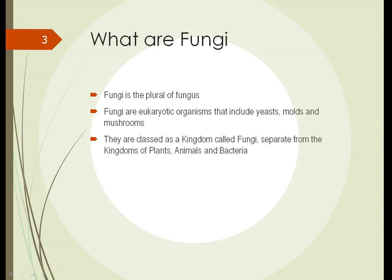Eukaryotic — what does that mean? 'Euk' is the Greek root word meaning truth or true, and 'karyo' means nucleus. So eukaryotic organisms are organisms that have a real nucleus. Prokaryotic organisms — 'pro' means before, so before nuclei. Prokaryotic organisms, primarily bacteria and archaea, don't have true nucleuses. So fungi are organisms with real nucleuses and include yeasts, molds, and mushrooms.